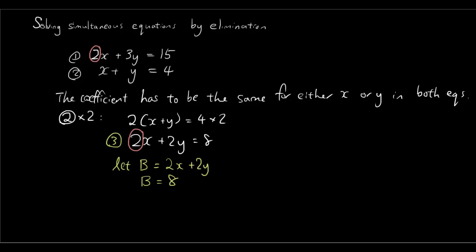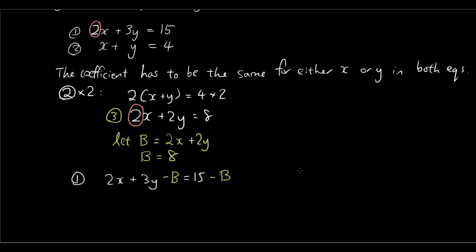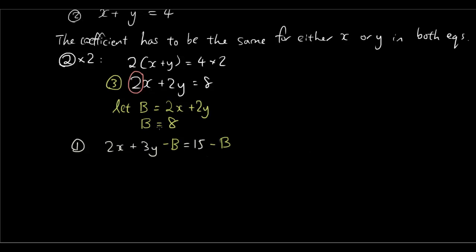And now what we're going to do is we're going to get our first equation which is 2x plus 3y equals 15 and we're going to minus B on both sides. And this is the process of elimination happening. Now if we minus B on both sides which we're allowed to do because we're balancing the equation.